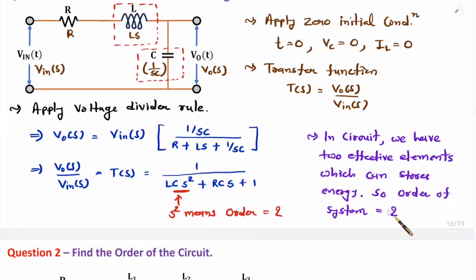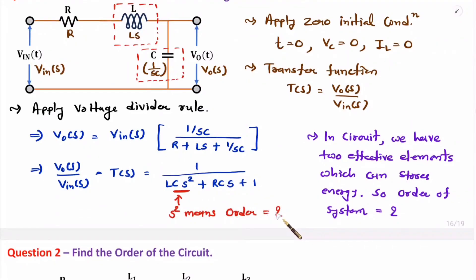So there are two ways to identify the order of the system. The first is by examining the transfer function — the denominator equation has order 2, so the order of the system is 2. The second way is by counting the effective elements that can store energy. Here we have two such elements, so the order of the system is 2.